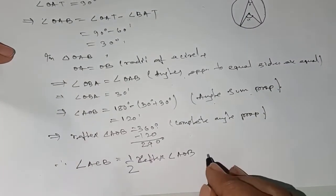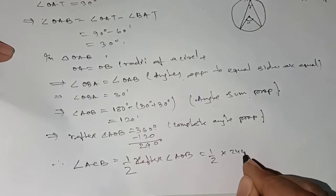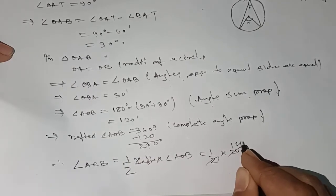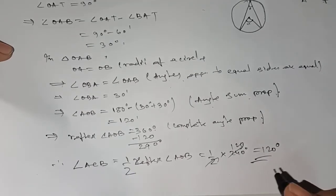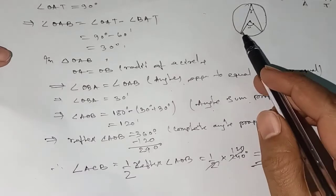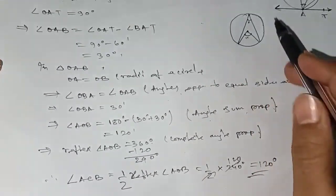So here we have half of 240, which is 120 degrees. That will be your answer. You need to write the reason: angle subtended at the center is double the angle subtended at any remaining part of the circle.